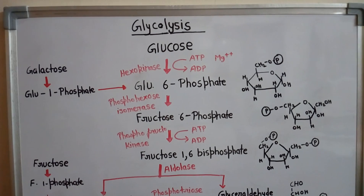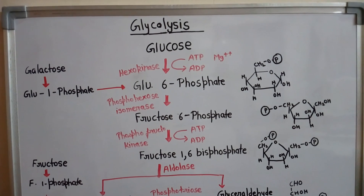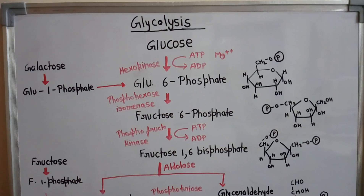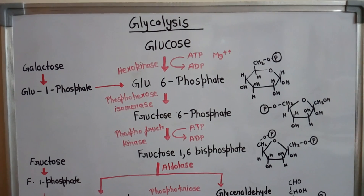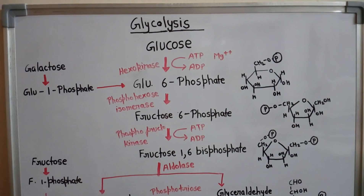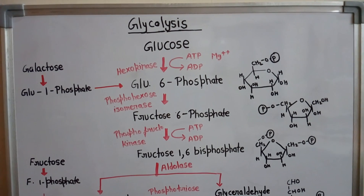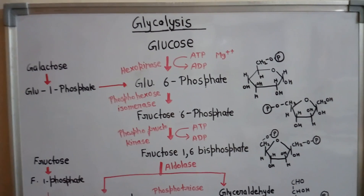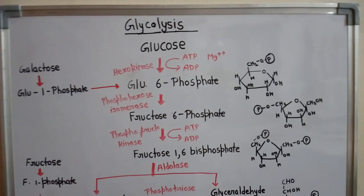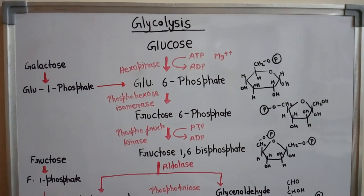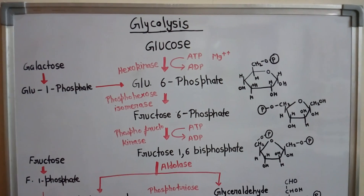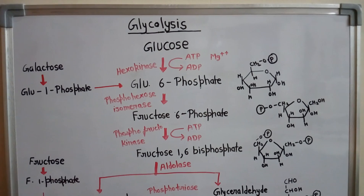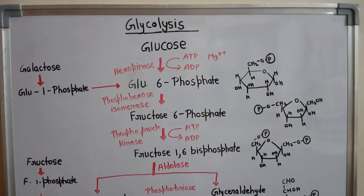Hello friends, today we will study about the process of glycolysis. As the name suggests, it is the breakdown of glucose. From one glucose molecule, two pyruvate molecules are synthesized, and in this process two molecules of ATP are produced.